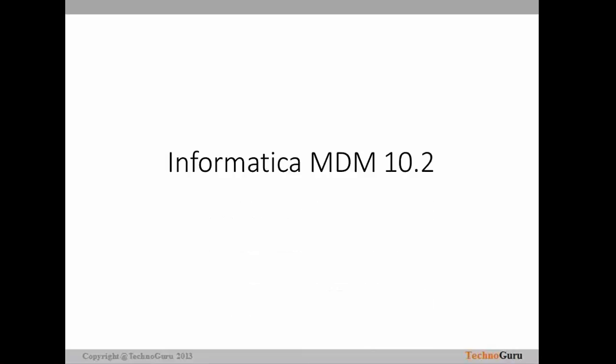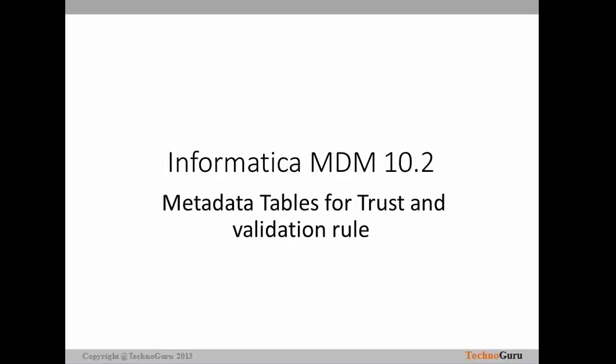Hello everyone, welcome back. In today's tutorial on Informatica MDM, we are going to see what are the metadata tables and metadata columns which are normally used for the trust and validation rules. Trust and validation rules are definitely useful to determine the golden record or to determine the survivorship. So let's see what columns and tables are normally used for these trust and validation rules.